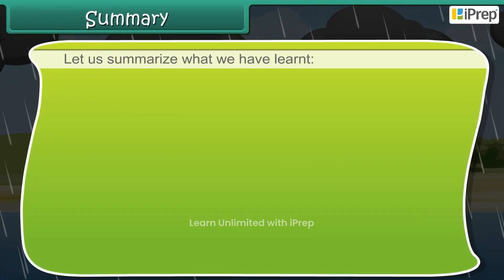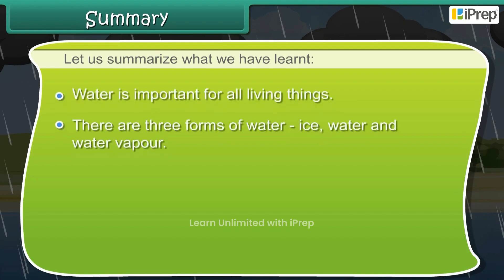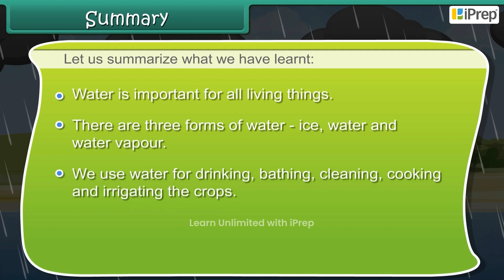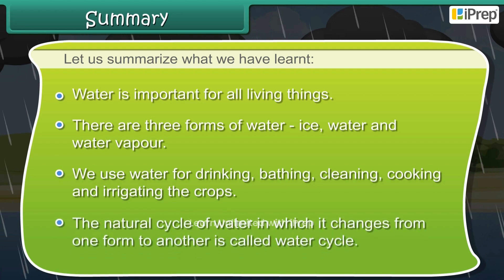Let us summarise what we have learnt. Water is important for all living things. There are three forms of water: ice, water and water vapour. We use water for drinking, bathing, cleaning, cooking and irrigating the crops. The natural cycle of water, in which it changes from one form to another, is called the water cycle.